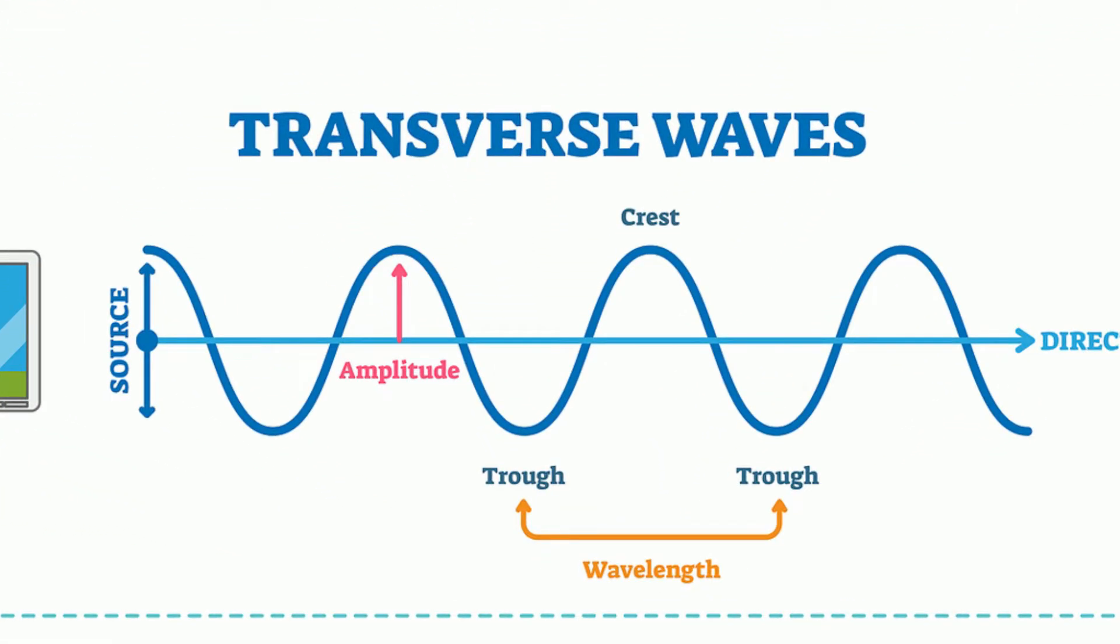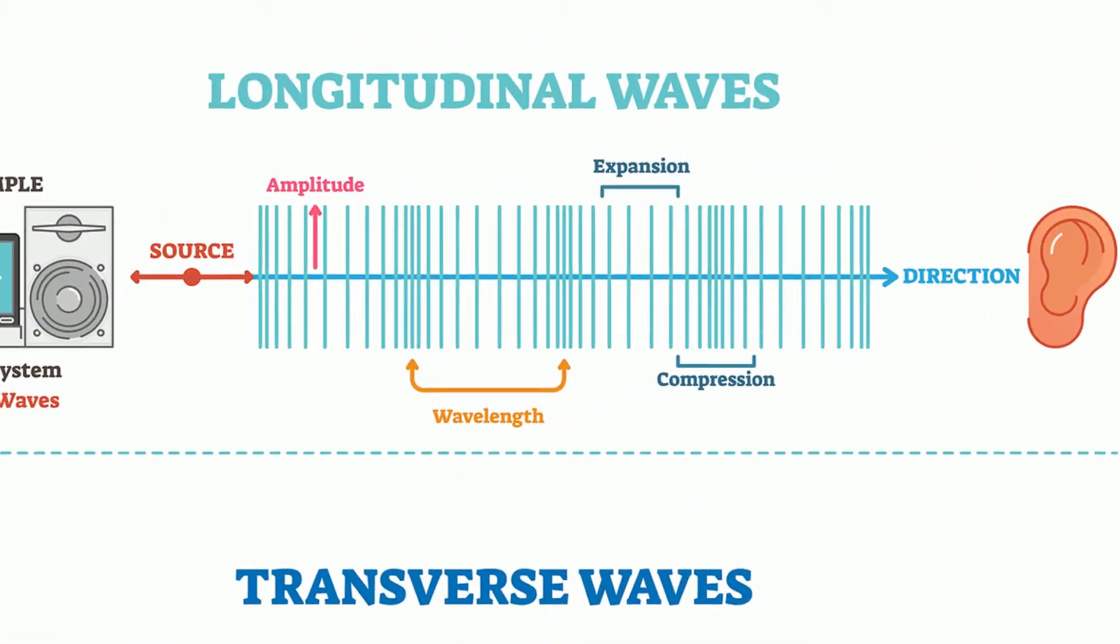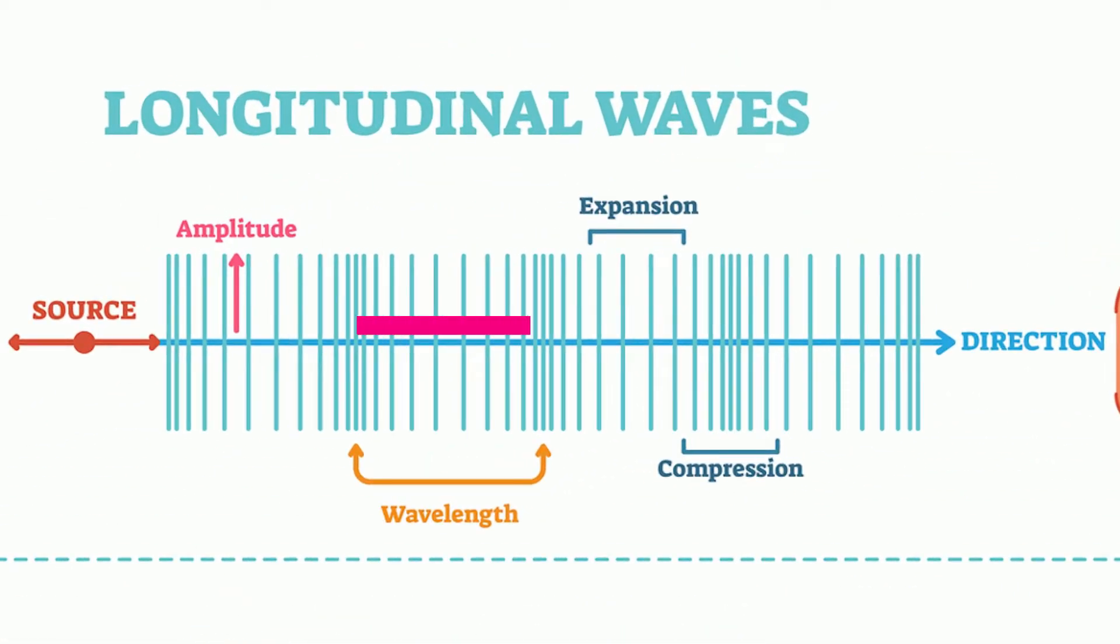The wavelength is the distance from crest to crest or trough to trough with a transverse wave, and from compression to compression with a longitudinal wave. Wavelength is represented by lambda.